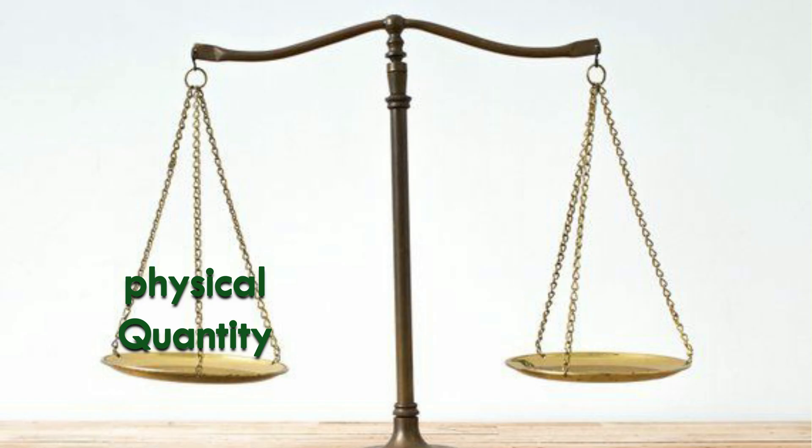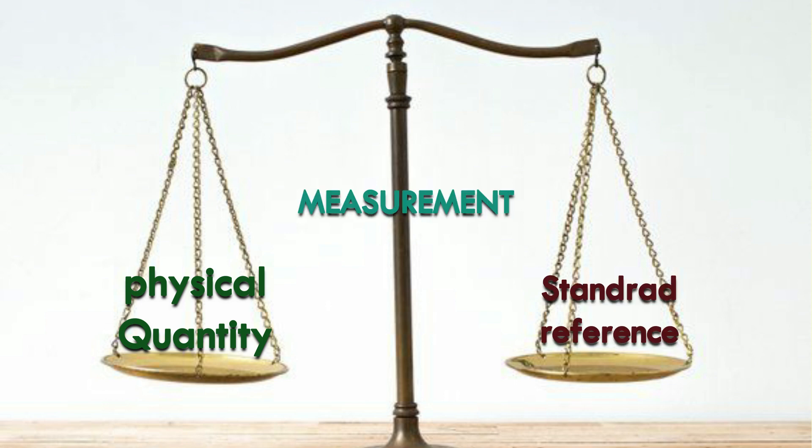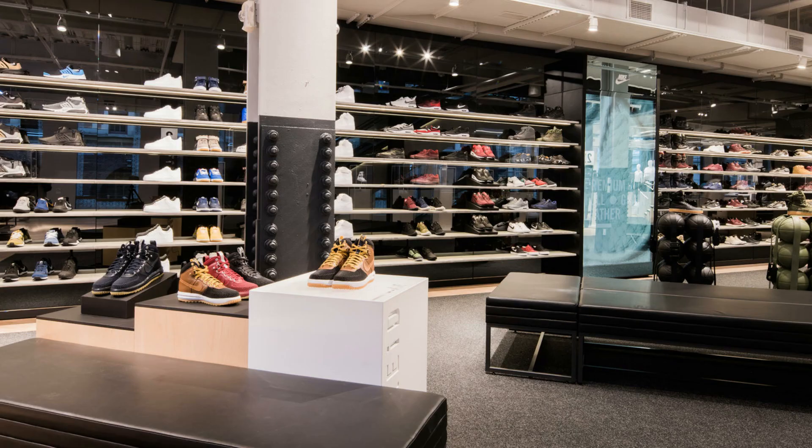Let me quickly summarize: physical quantities are quantities which can be measured, unit is the standard reference of a physical quantity, and measurement is a comparison of a physical quantity with a unit. Not only in buying vegetables, but we come across many situations where measurement is absolutely necessary — for example when you buy clothes or shoes, it helps you find the right fit.